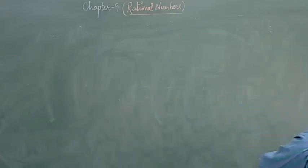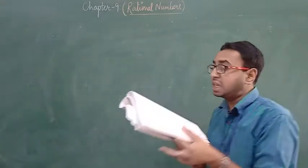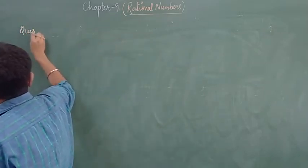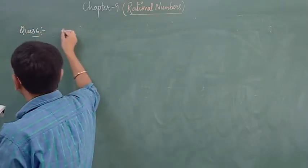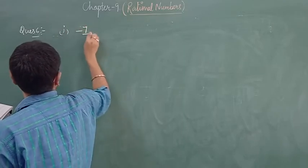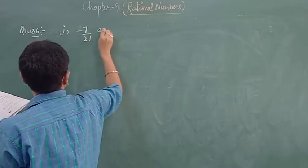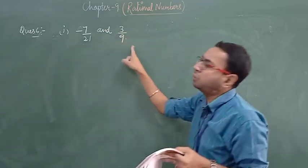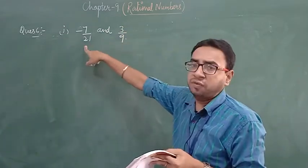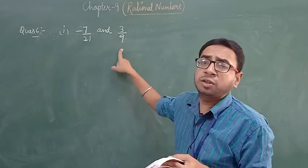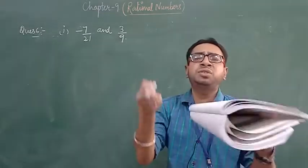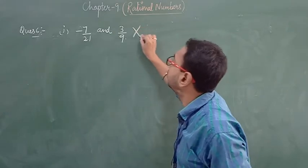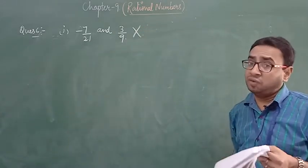Question number 6: which of the following pairs represents the same rational number? First part: minus 7 upon 21 and 3 upon 9. Here we can see one is negative and one is positive. A positive and a negative rational number cannot be equal to each other, so from here we conclude they are not equivalent.